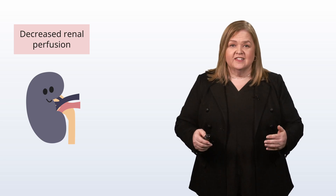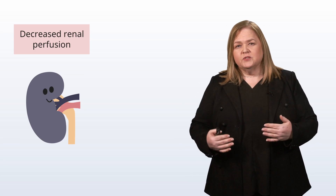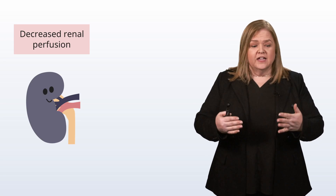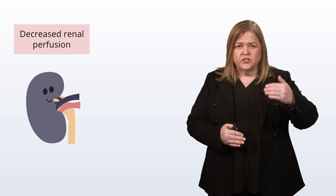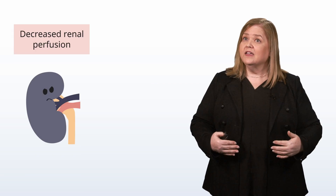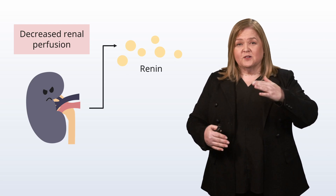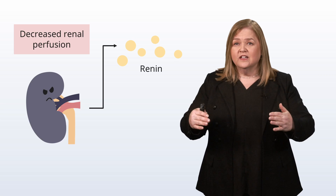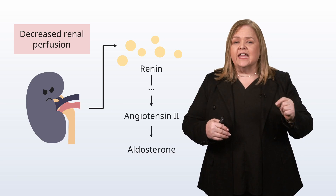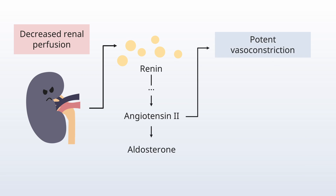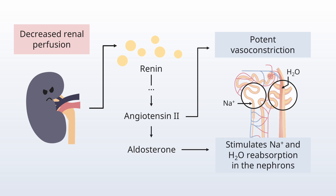Then there is the RAAS. When there's decreased renal perfusion, the kidneys pick up that they're not getting what they normally get and kick out renin. You end up with aldosterone and angiotensin 2. One way the body tries to treat low volume is by making those vessels smaller to raise blood pressure, and telling the body to reabsorb sodium and water to increase volume. Under normal circumstances this might be enough, but if someone is in hypovolemic shock, this is not enough to fix the problem.